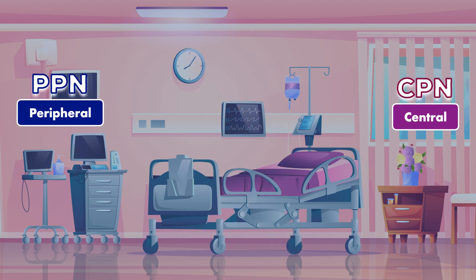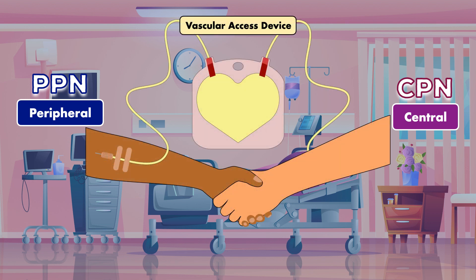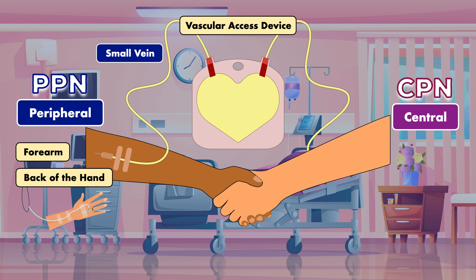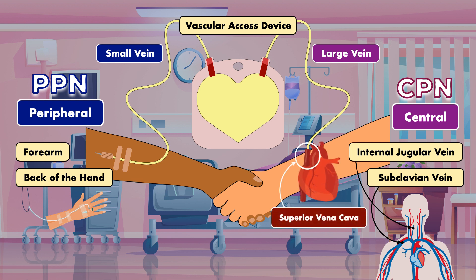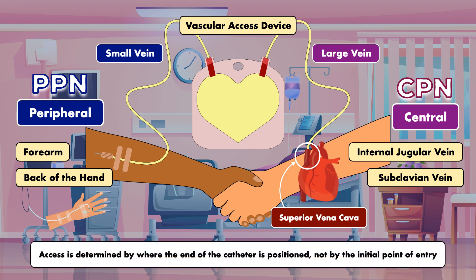The major difference between PPN and CPN is with the type of vascular access device that is used to deliver nutrients. PPN is infused into a small vein through a peripheral venous catheter, usually located on the forearm or the back of the hand. CPN is administered into a large vein through a central venous catheter. Common insertion points include the internal jugular vein and the subclavian vein, with the end positioned close to the heart in the distal third of the superior vena cava. An important consideration is that access is determined by where the end of the catheter is positioned, not by the initial point of entry.